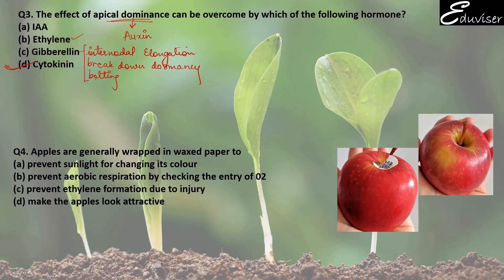The options are: prevent sunlight from changing color; prevent ethylene formation due to injury; make apples look attractive; prevent aerobic respiration by checking the entry of oxygen. Option B is the correct answer — prevent aerobic respiration by checking the entry of oxygen. If oxygen doesn't enter, aerobic respiration won't happen and the apple won't rot.